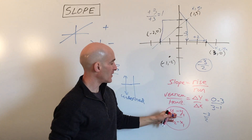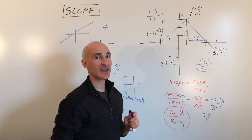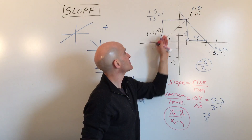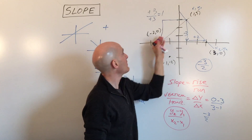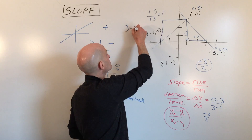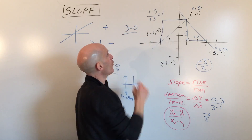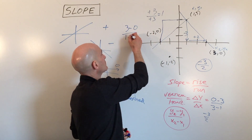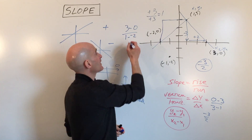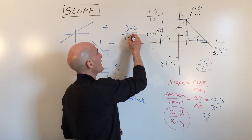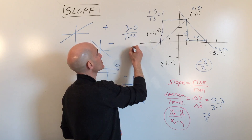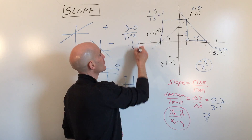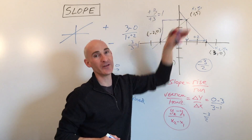Using the formula for these two points, we do y2 minus y1 over x2 minus x1: three minus zero over one minus negative two. Three minus zero is three, and one minus negative two is three, so three over three equals one — confirming the slope is one.